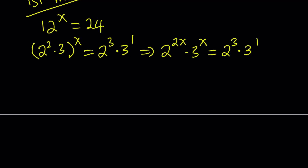Now I want to put powers of 2 together. So let's go ahead and divide both sides by 2 to the third power. On the left-hand side, that gives us 2 to the power 2x minus 3. And let's go ahead and divide both sides by 3 to the power x, bringing the 3 to the power x to the right-hand side, giving us 3 to the power 1 minus x. Great — I was able to get a power of 2 equal to a power of 3, which is good.